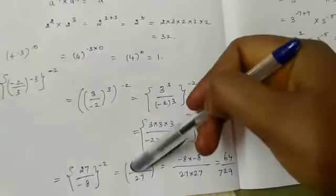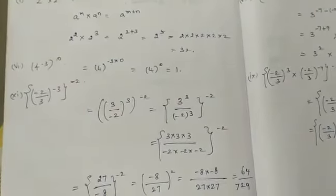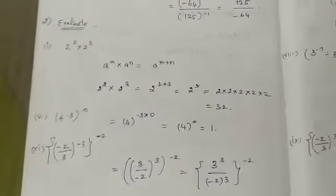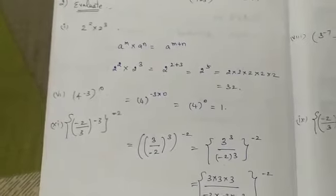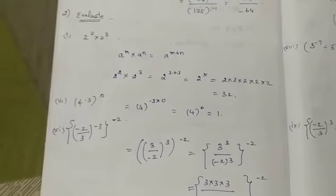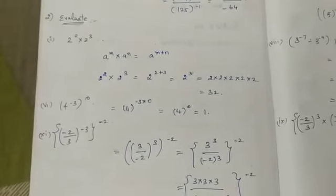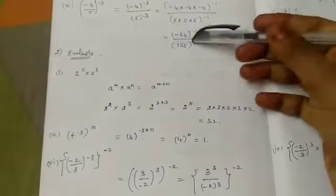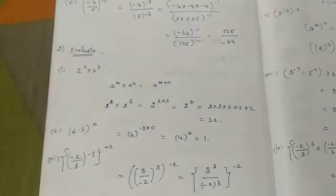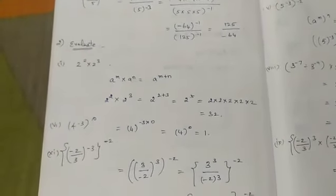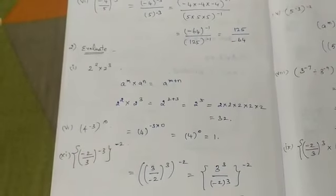Copy these three worked examples into your classwork notes. The remaining sums are homework. Today's class: write the topic, definition, notes on even/odd power rules, all five laws of exponents, and complete Exercise 1 and 2 sums. Finish the homework sums in your notes as well. Thank you, children, for watching the video.